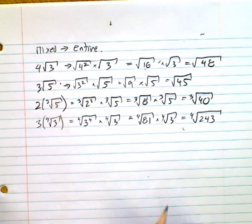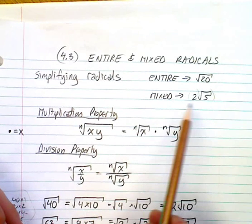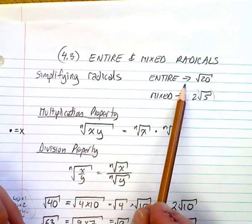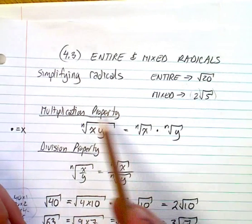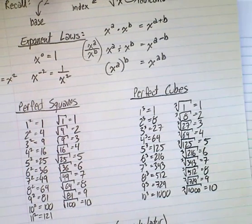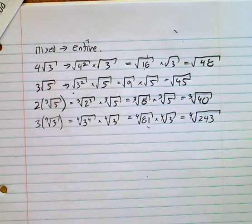That's section 4.3 — mixed radicals and entire radicals. It's all about manipulating radicals using important rules. Make sure you have all of these written down and it shouldn't be a problem. Have a nice day!